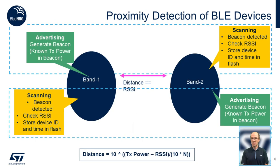Now let's describe the process between two nodes, which could be any type of device such as a band or a tag. The process is started by Band 1 generating beacons with a known TX power. Band 2 scans and detects these beacons, checks the RSSI, and stores the device ID and the time in flash. At the same time, Band 2 also advertises beacons, which Band 1 in turn detects, checks the RSSI as well, and stores both the ID and the timestamp in flash.